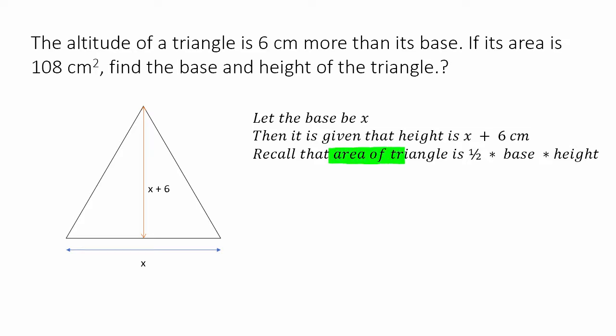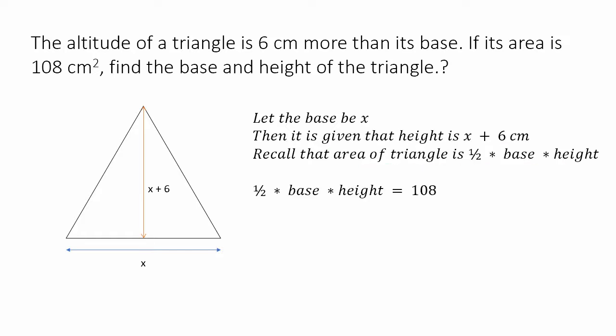We have to remember that the area of a triangle is half times base times height. You cannot solve the problem if you do not remember the formula for area. The area formula is half base height, and in this case, half base height equals 108.